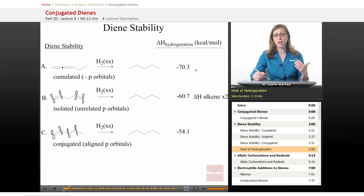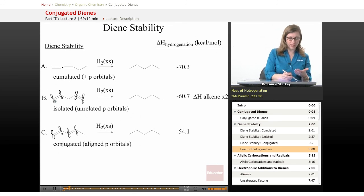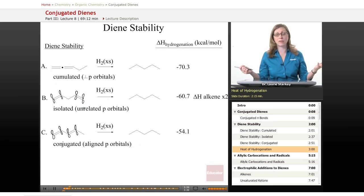Let's take a look at the isolated pi bonds. Initially the energy release there is minus sixty point seven kcal per mole. That's essentially the heat of hydrogenation for an alkene times two, so because these double bonds are separate from each other and have no interaction, you simply get twice as much energy out as if you had just one pi bond.